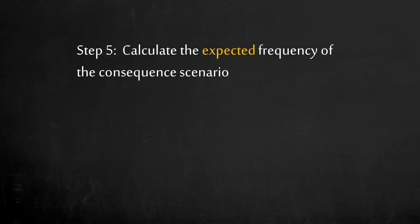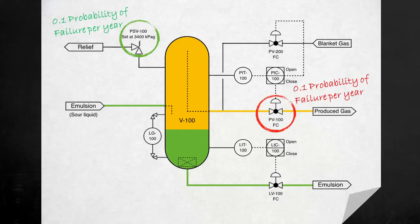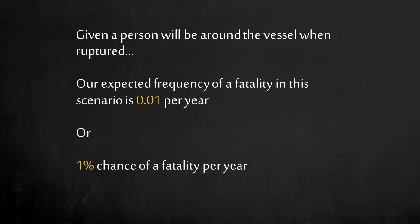Step 5: calculate the expected frequency of the consequence scenario. Given the probability of the initiating event — the pressure control valve inadvertently closing — and the probability of the PSV failing, what is the probability of vessel rupture? With a simple formula, the expected frequency can be calculated. Considering the vessel is in a high traffic area and a person is around during a vessel rupture, we can expect a 1% chance of a fatality per year — a 1 in 100 chance event.